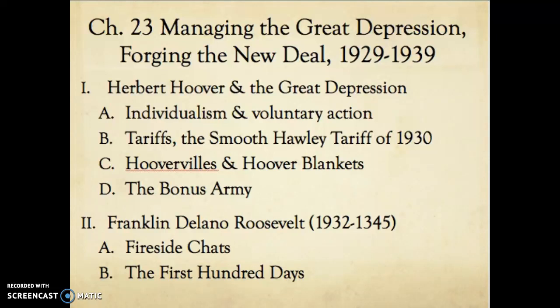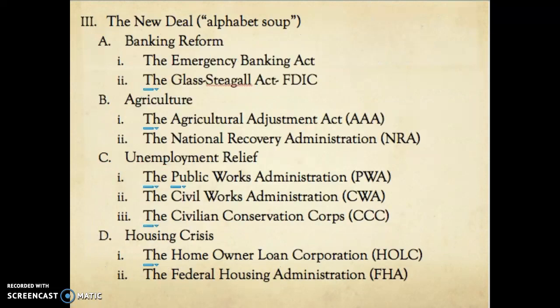Chapter 23: Managing the Great Depression and Forging the New Deal, from 1929 to 1939. We'll look at Herbert Hoover and his response to the Great Depression, then Franklin Roosevelt and how he dealt with it, which becomes known as the New Deal — sometimes called the alphabet soup because of all the acronyms you see here.